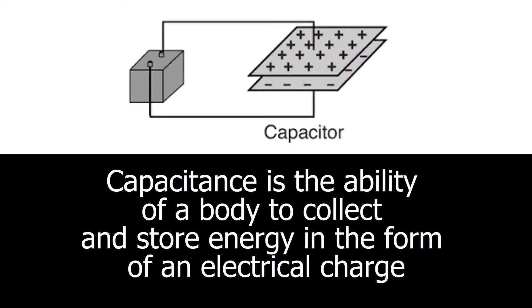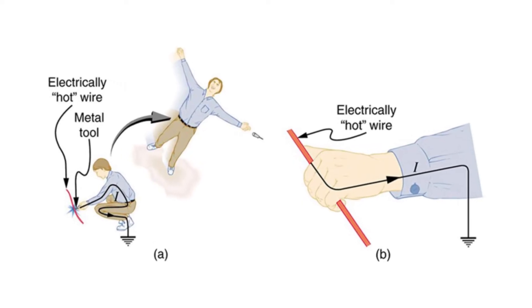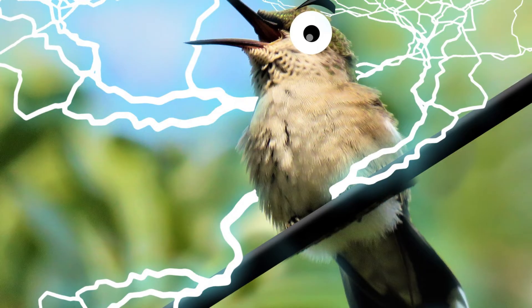And that is because of capacitance. Capacitance is the ability of a body to collect and store energy in the form of electrical charge. Bigger the body, the larger the capacitance. So a human body will have a larger capacitance than a bird.